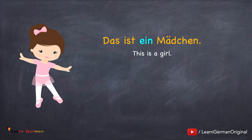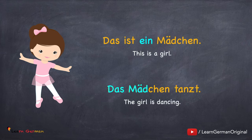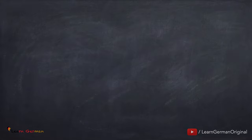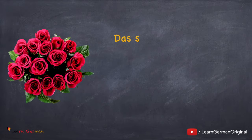Das ist ein Mädchen. Das Mädchen tanzt. So in this case when the definite article is das, the indefinite article is ein. Let's look at the case where we have plural.